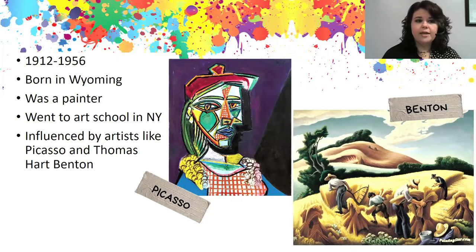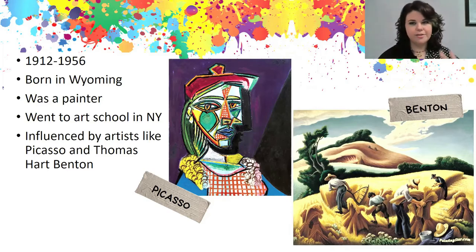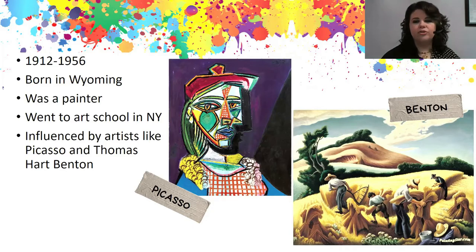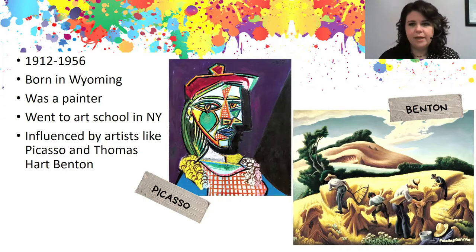He went to art school in New York, and he was influenced by artists like Picasso and Thomas Hart Benton. I included some pictures here so you can see a Picasso — he was famous for having these crazy portraits made out of shapes and wild colors. You can tell that's a person, but it's not a super realistic looking person. We call that movement cubism. And then Benton's work was a little more realistic, but everything had that wavy, curved look — like you're looking at it through a fish-eye lens. Everything is kind of rounded and curved in his paintings.